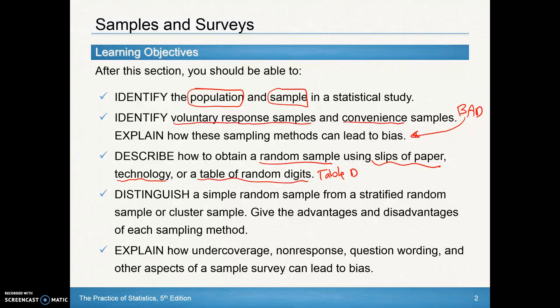We'll distinguish a simple random sample, otherwise known as an SRS, from a stratified random sample or cluster sample. And then we'll look at under coverage, non-response, and question wording that can lead to bias.